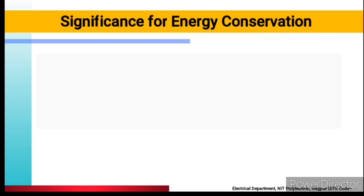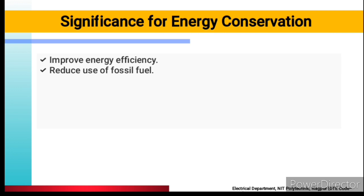Significance of co-generation for energy conservation: first, energy efficiency is improved — as shown in the analysis chart, when we give 100% fuel to a conventional plant only about half the output is obtained, but in co-generation you will get good output. Second, reduced use of fossil fuels — because the fuel you use will not be wasted. You use one fuel and use it twice — to generate both heat and electricity.